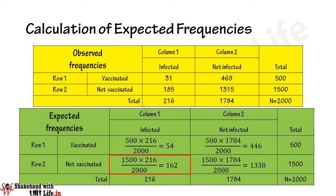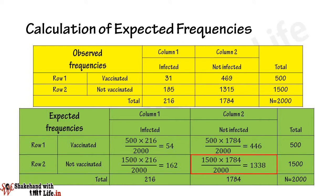The expected frequency of cell 3 is the frequency of not vaccinated (1500) multiplied by the frequency of infected (216), divided by 2000, and we get 162. The expected frequency of cell 4 is the frequency of not vaccinated (1500) multiplied by the frequency of not infected (1784), divided by 2000, and we get 1338.